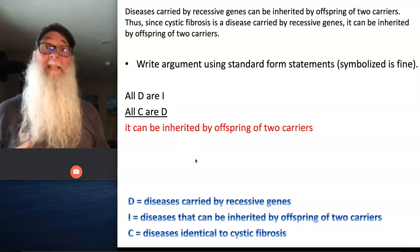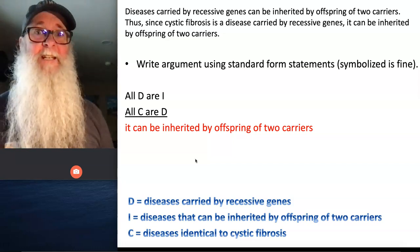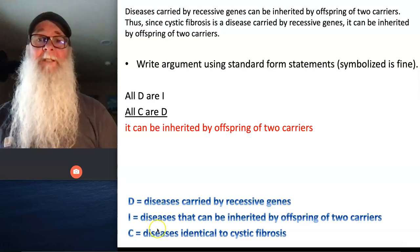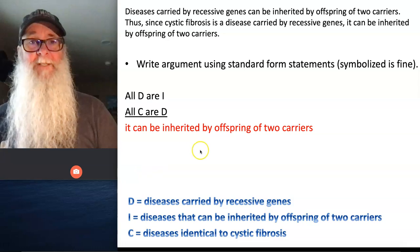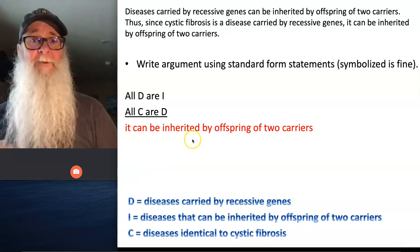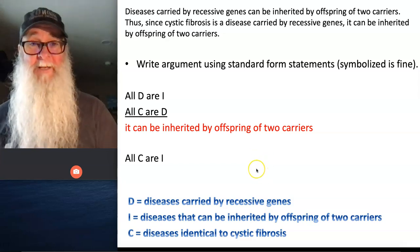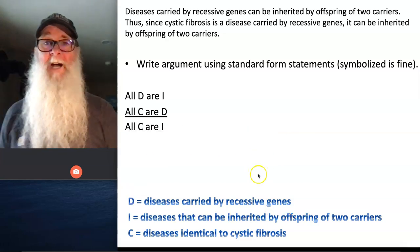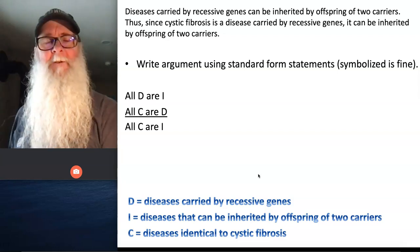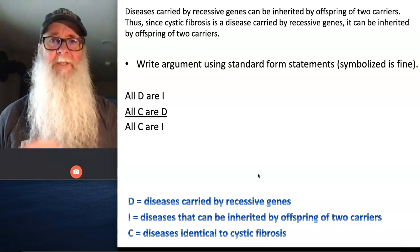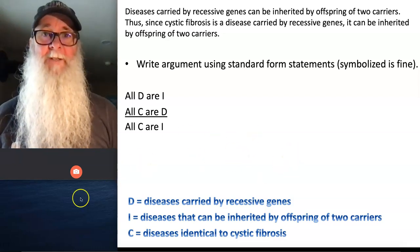Finally, my conclusion: 'it can be inherited by offspring of two carriers.' What's the 'it'? It's cystic fibrosis — diseases identical to cystic fibrosis. All of them are diseases that can be inherited by offspring of two carriers. So my conclusion becomes: All C are I. I've now completed step three — the argument is written in standard form categorical statements, with three terms each appearing exactly twice. Now I can move on to step four.